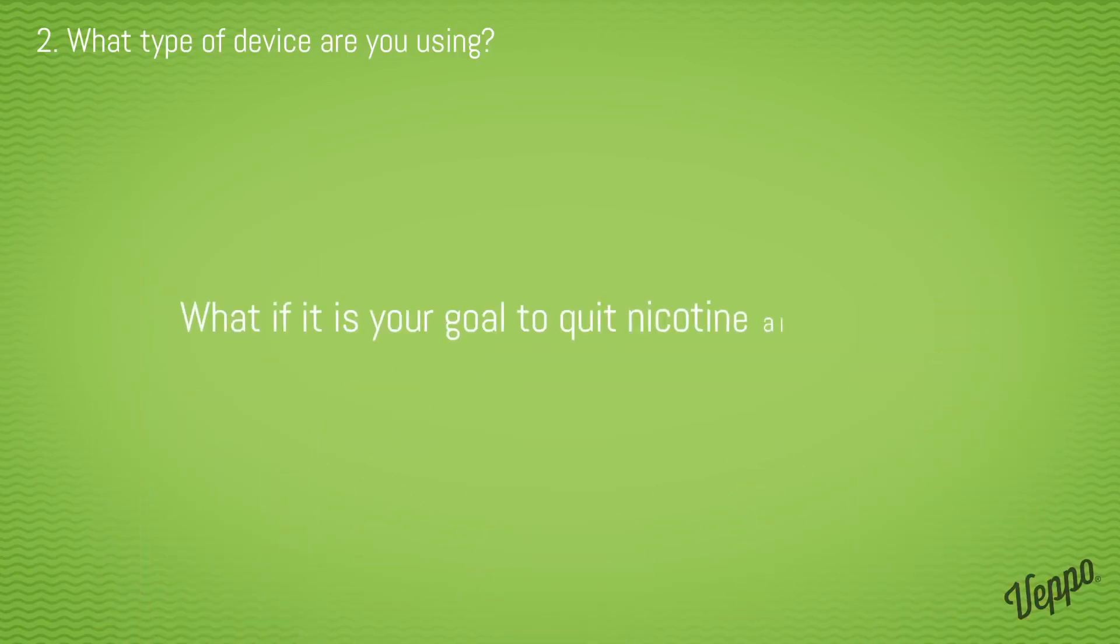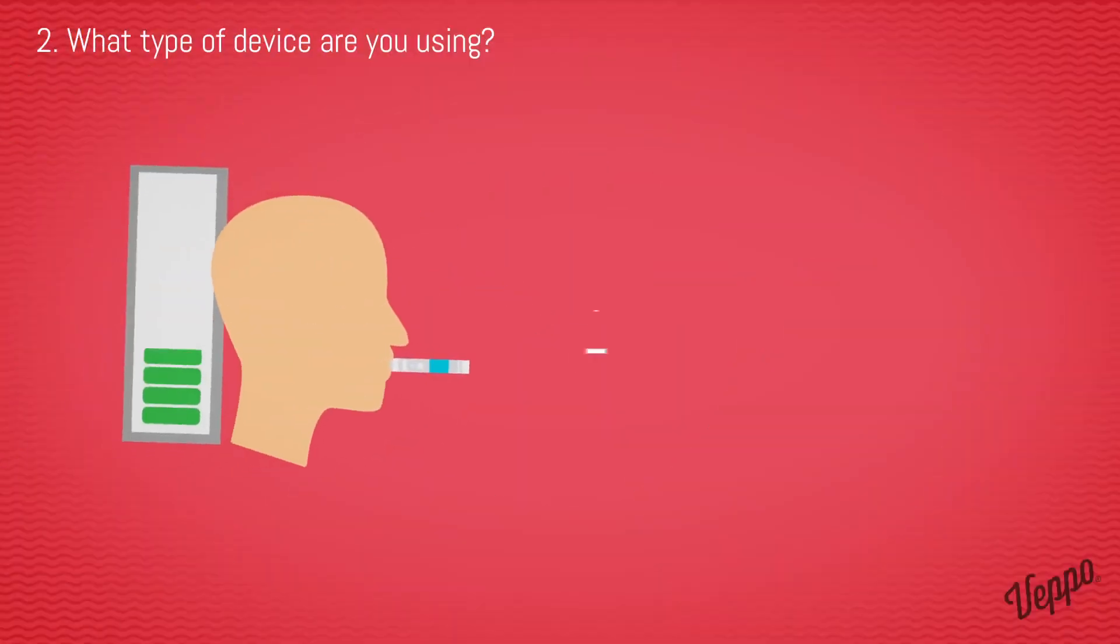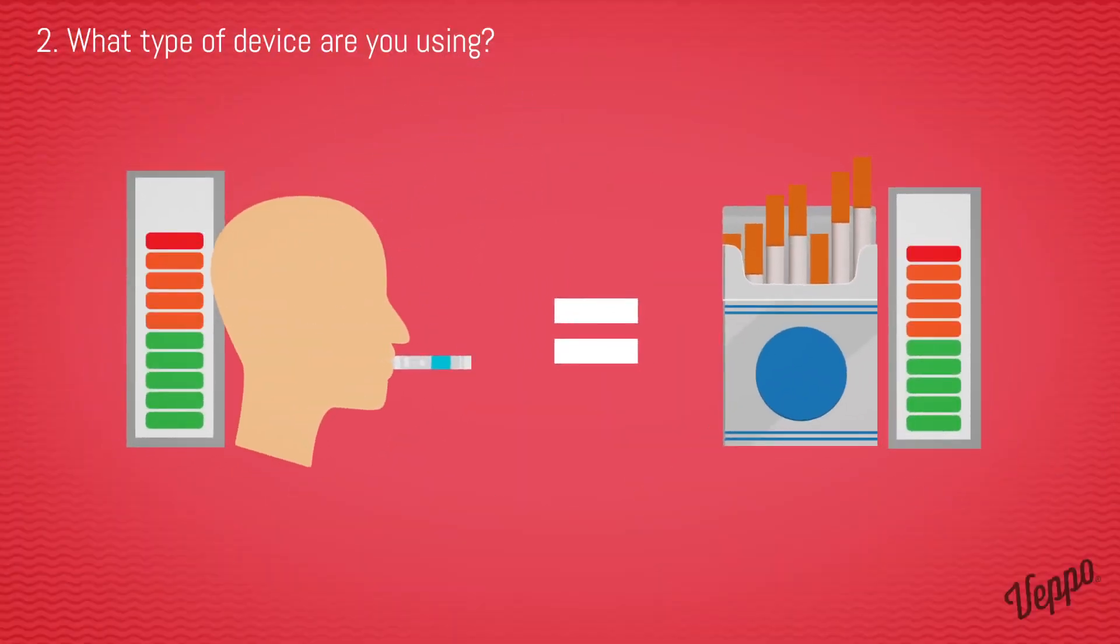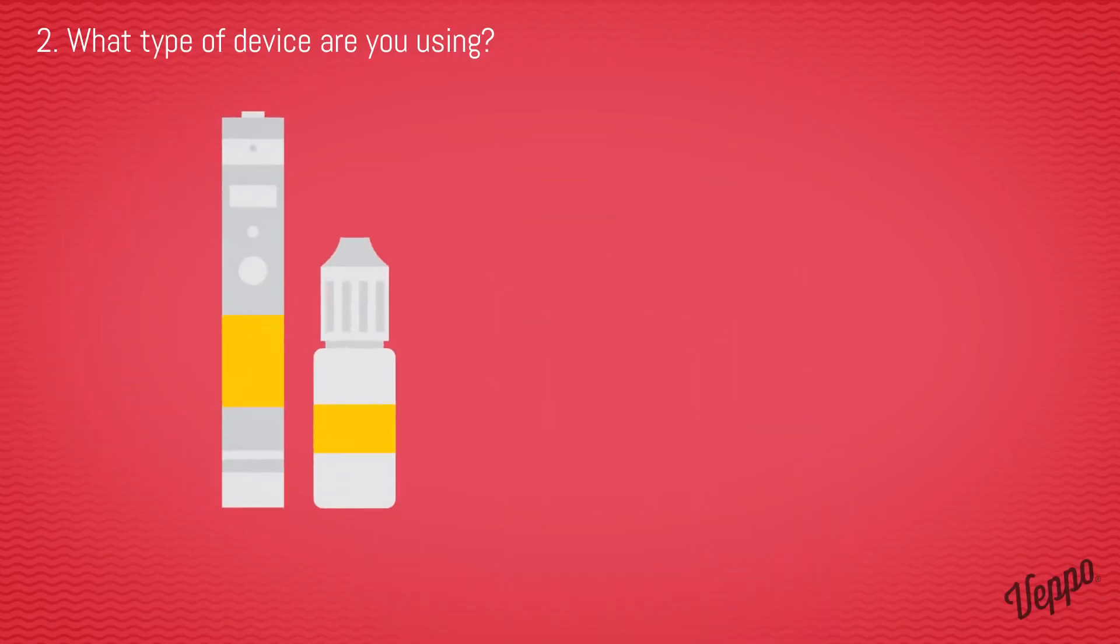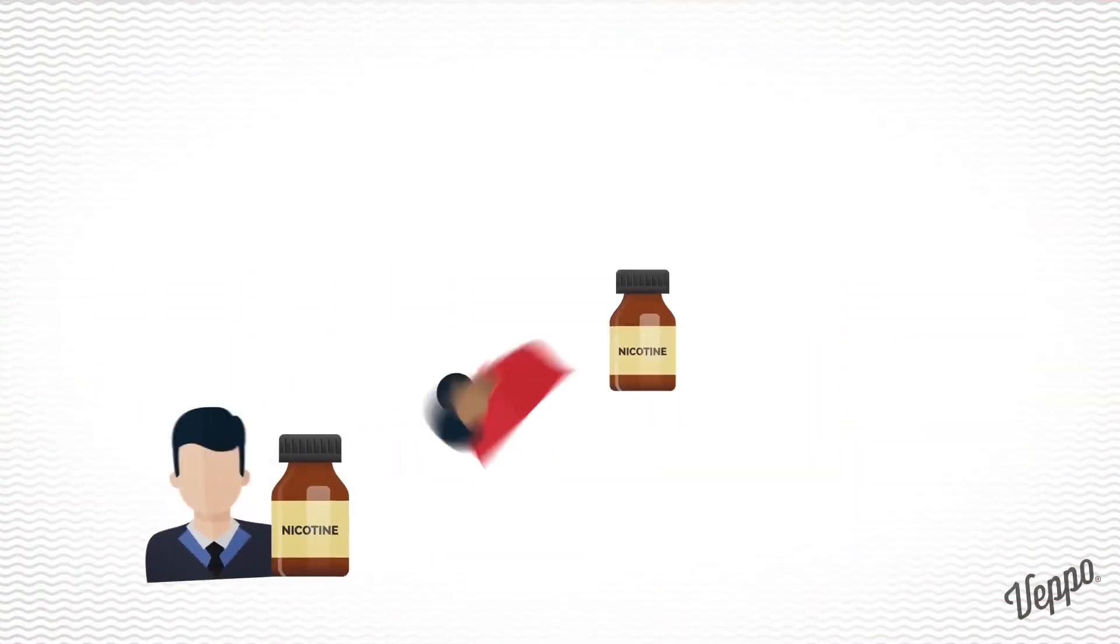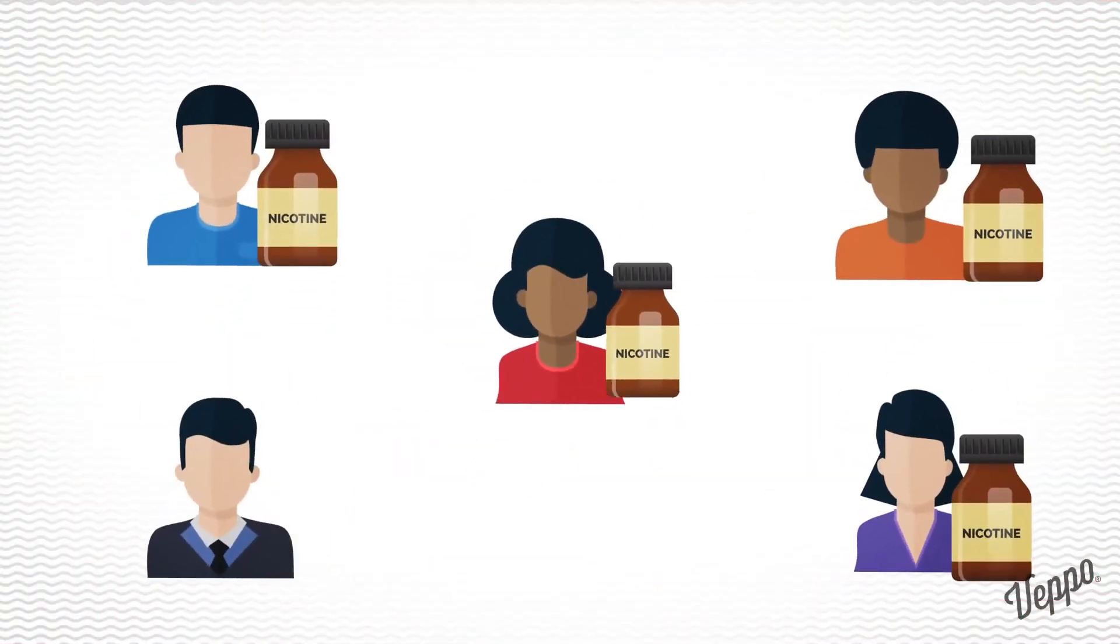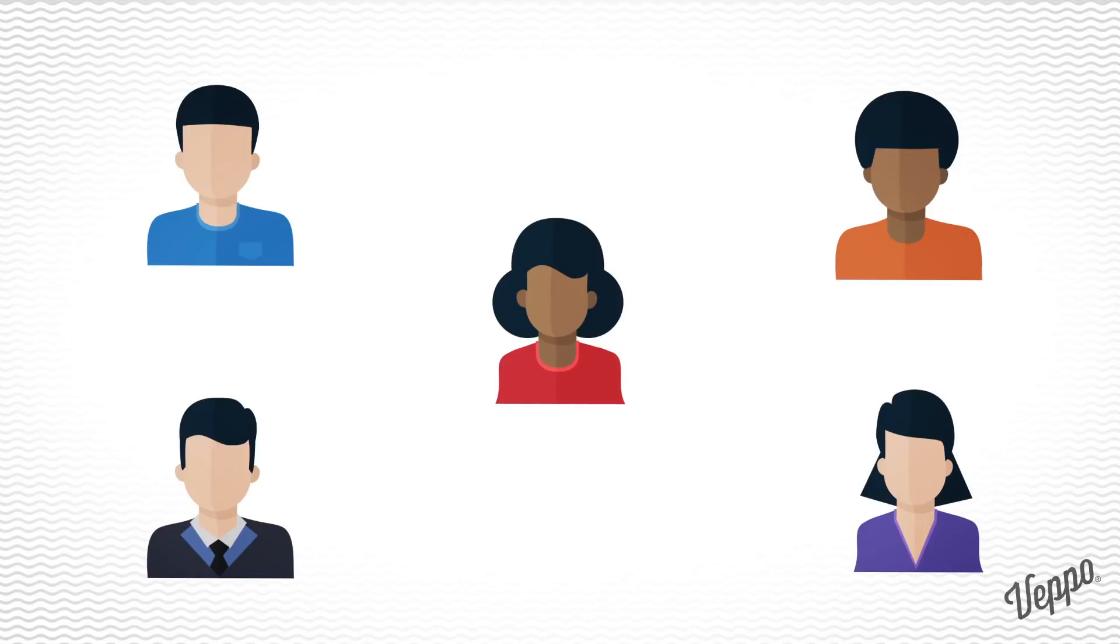What if it is your goal to quit nicotine altogether? Vaping is perfect for that. Start at the amount that matches your current tobacco product, and then reduce the level gradually over time as it feels right for you. Nicotine-free options allow you to continue vaping without the nicotine. This method has enabled many vapers to quit nicotine but still enjoy the pleasures of vaping.